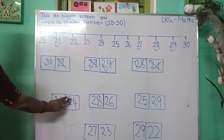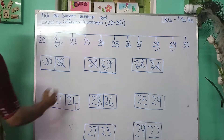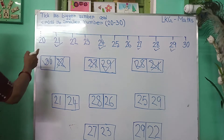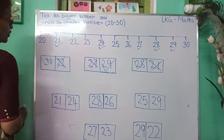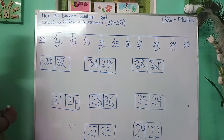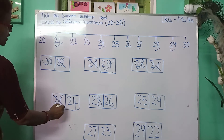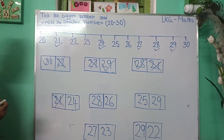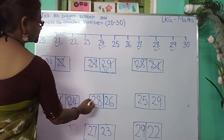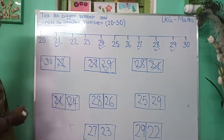Here, 21 and 24. Where is 21? Here is 21. And where is 24? Here is 24. In between the two numbers, I have written 21 first, then 24. 21 is the first number and 24 is the last number. So, the first number will be the smaller number, so I will put a cross. And 24 is the last number, so I will put a tick.